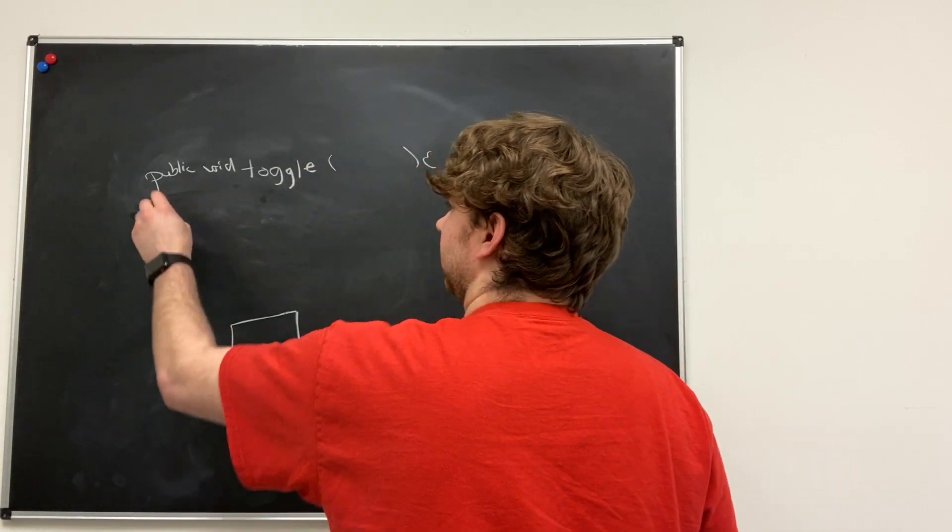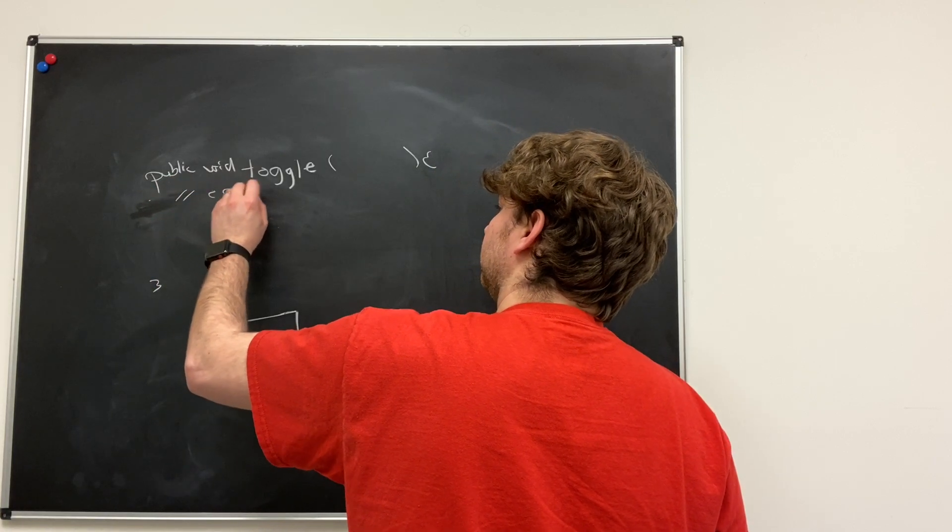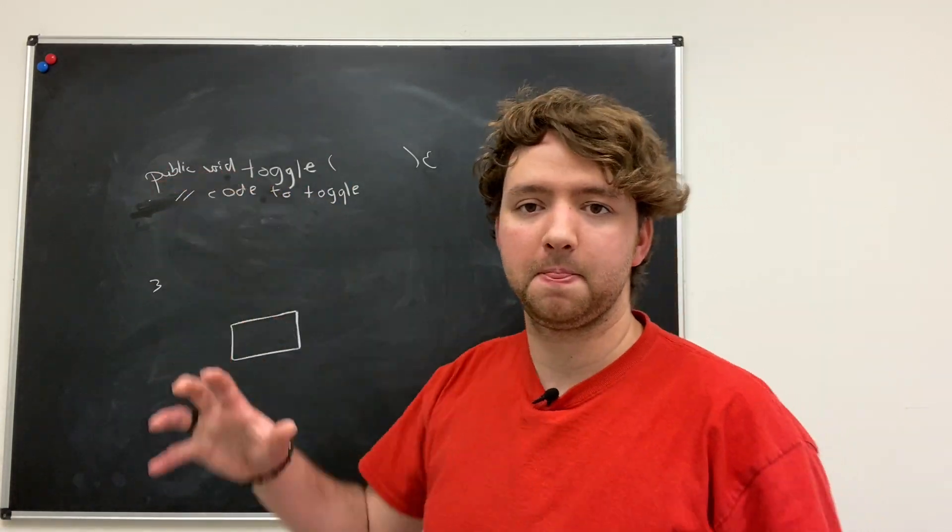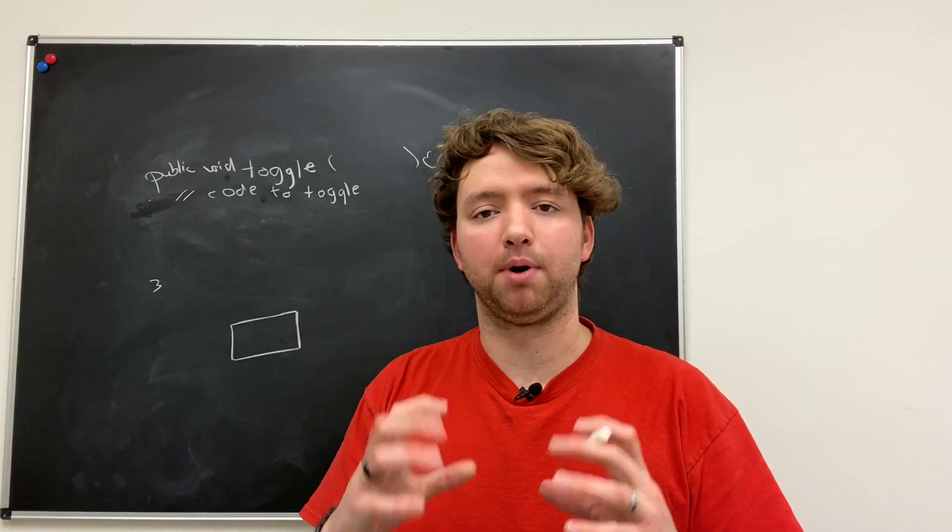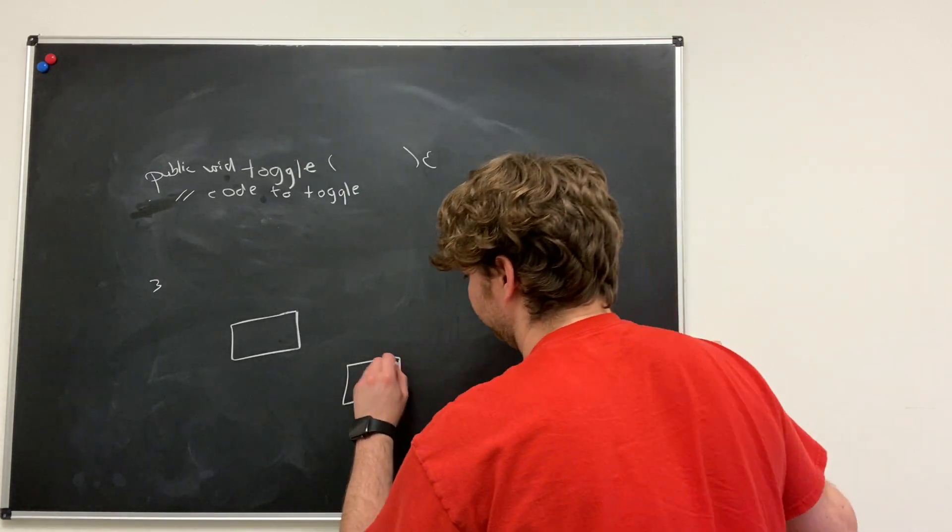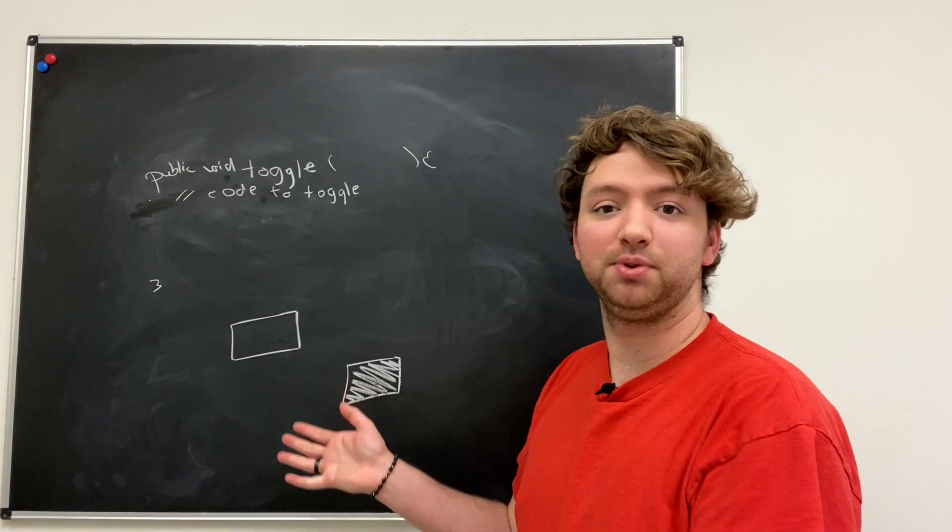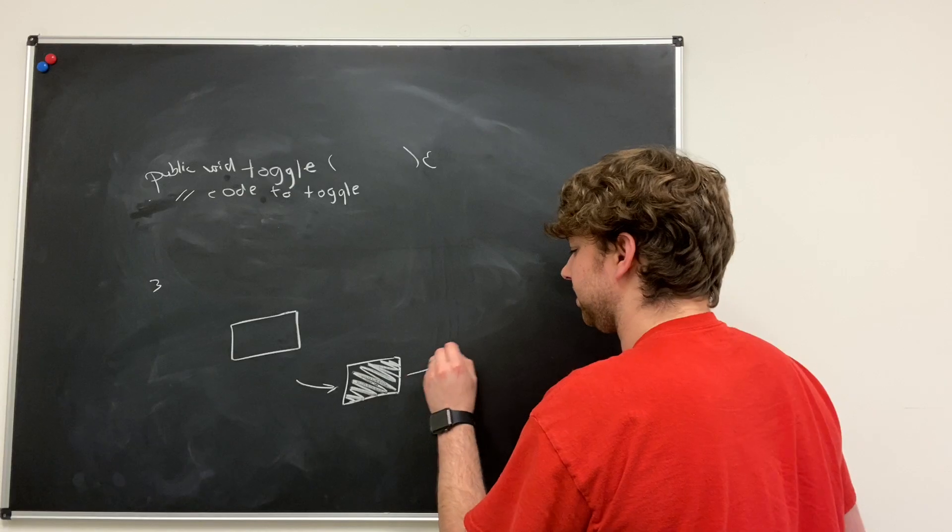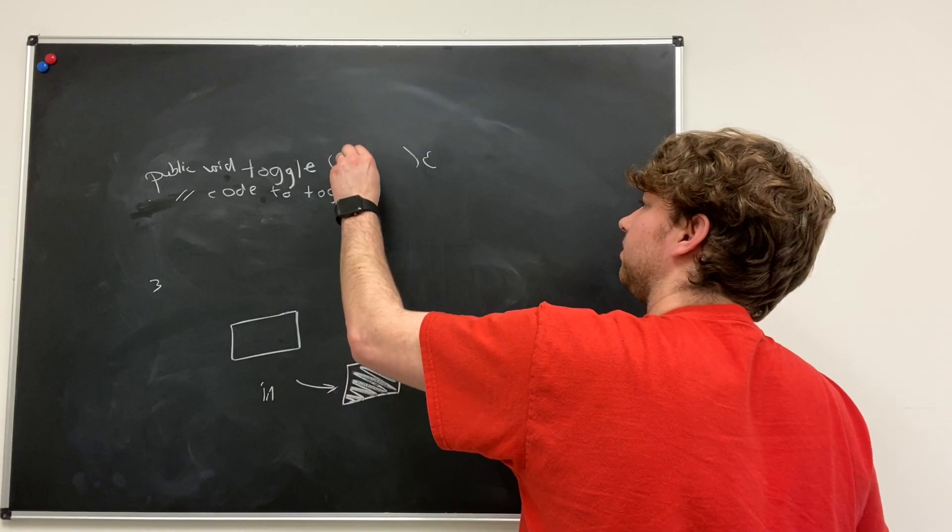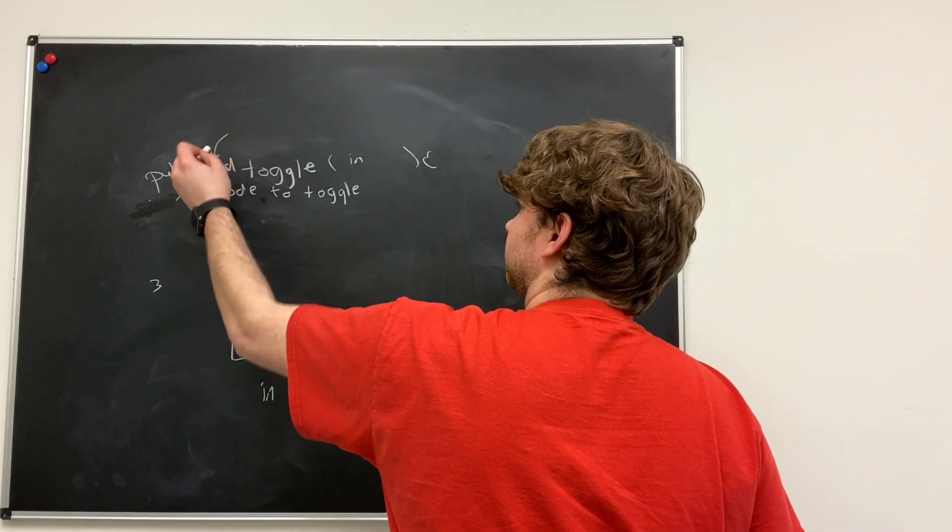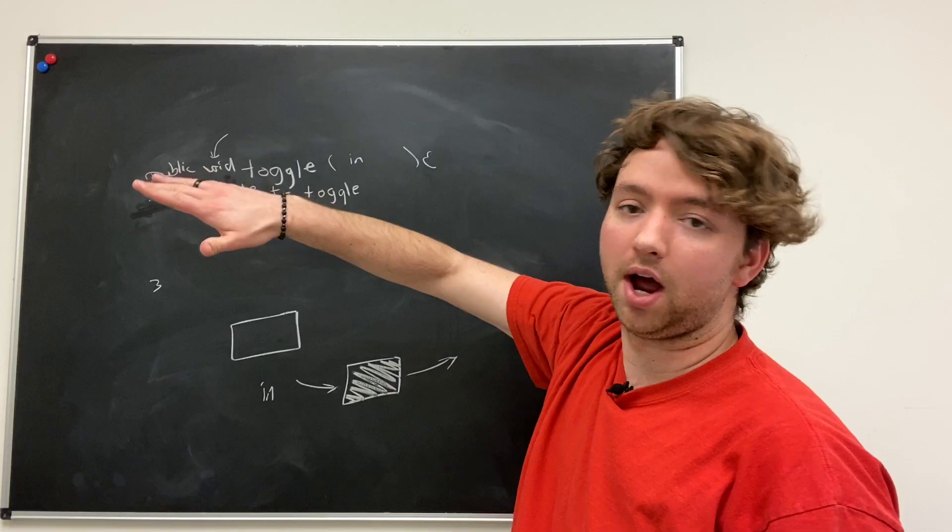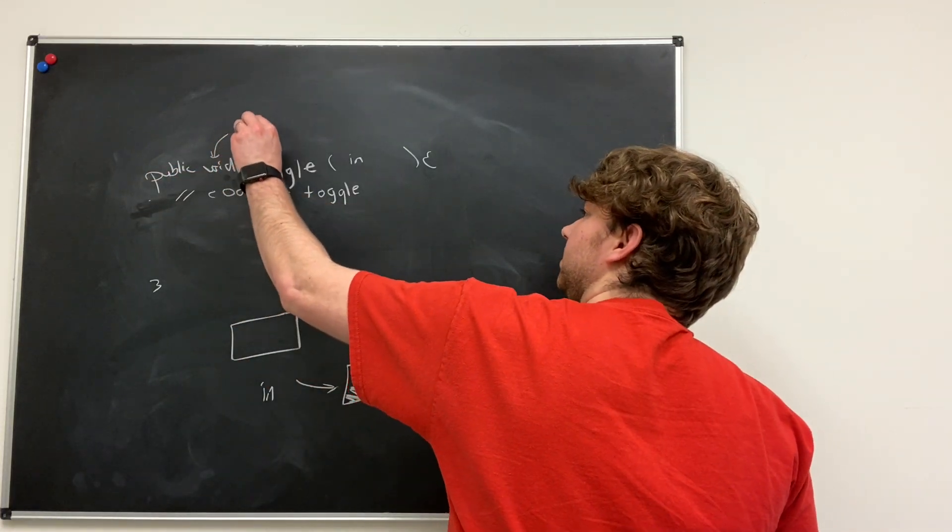The void here - if you think of a method as this black box, or white box, it has some input and potentially some output. The input goes here, and you say if there's going to be some output by putting something here. When you say void, you're saying there's no output.